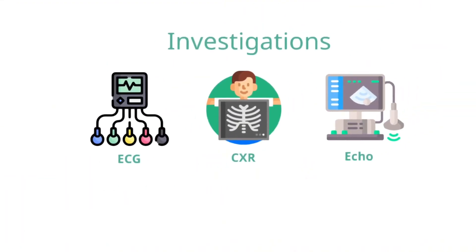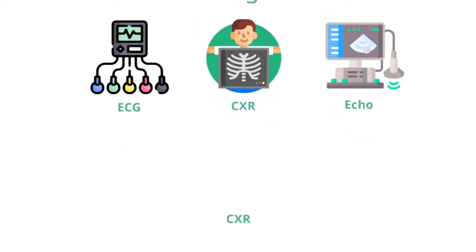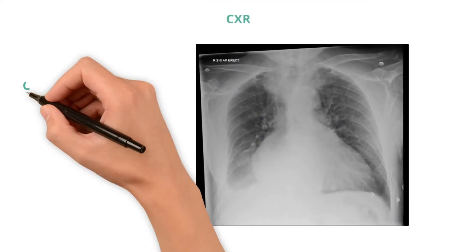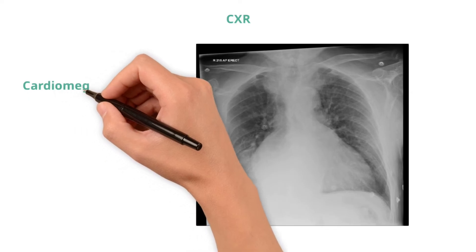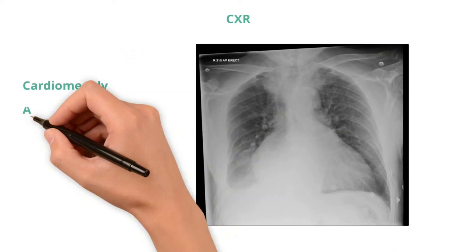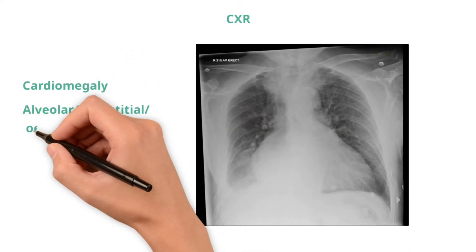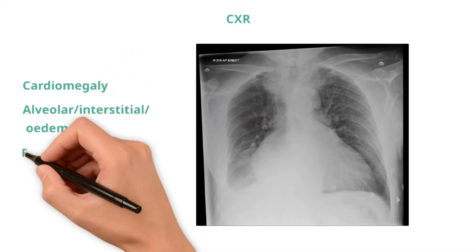Next, let's look at a chest x-ray from a patient with severe mitral regurgitation. There are multiple signs of heart failure, including cardiomegaly, bilateral alveolar edema, and bilateral pleural effusions.